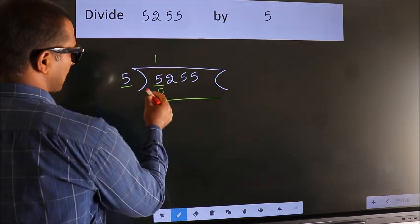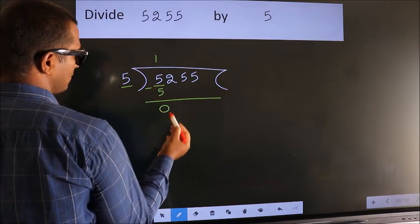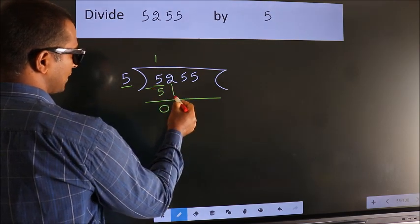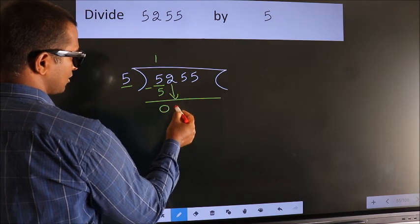Now we should subtract. We get 0. After this, bring down the next number. So 2 down.